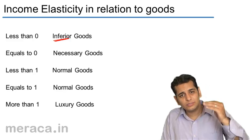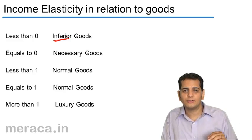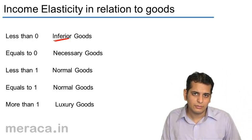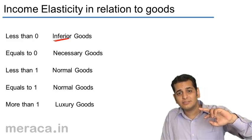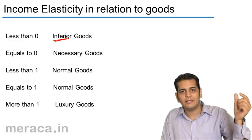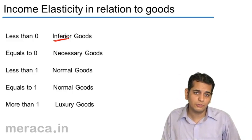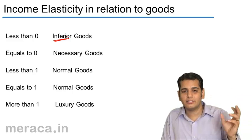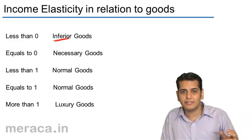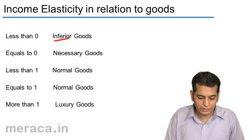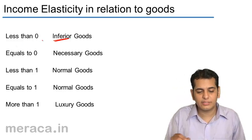He reduces the consumption of inferior goods as his income goes on rising. What happens is there is an indirect relation between income and demand of inferior goods, which leads to a negative answer — less than zero.